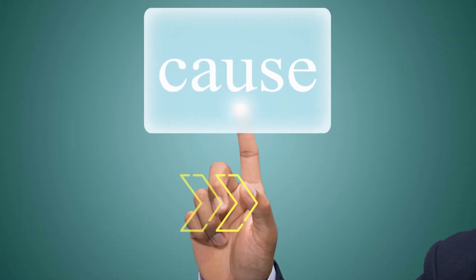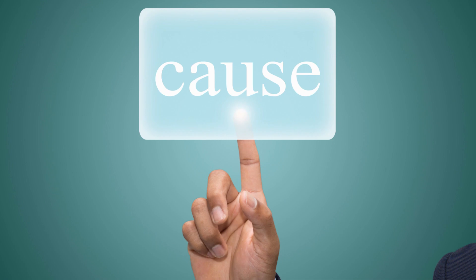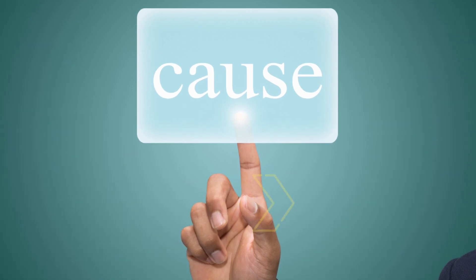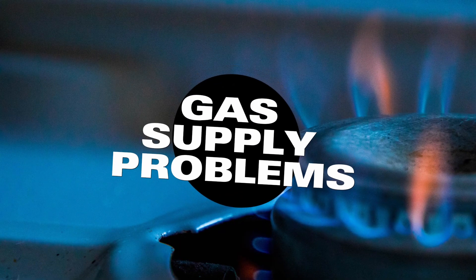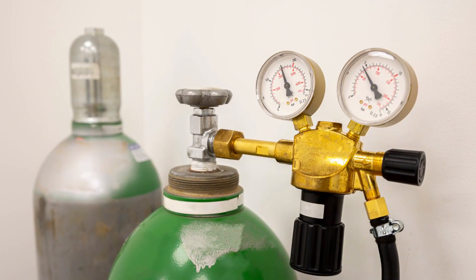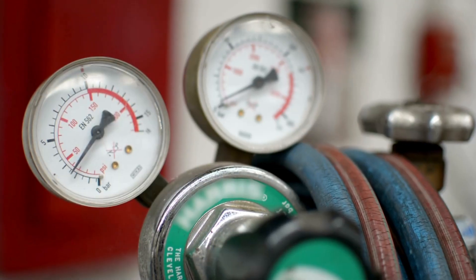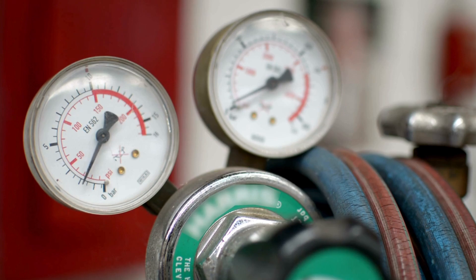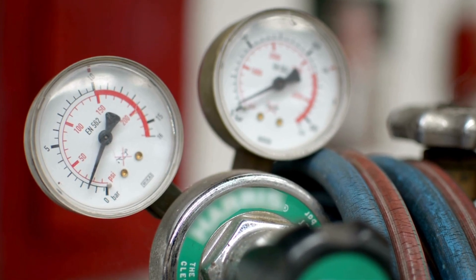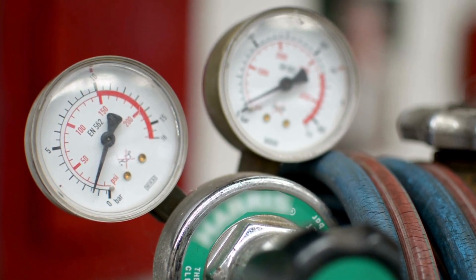The following are some of the common causes of error code 13. Gas supply problems arise when the flow rate becomes insufficient or inconsistent. If the pressure of your gas flow changes, the error code gets triggered and appears.